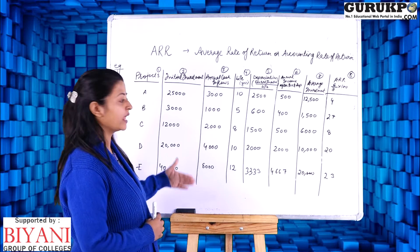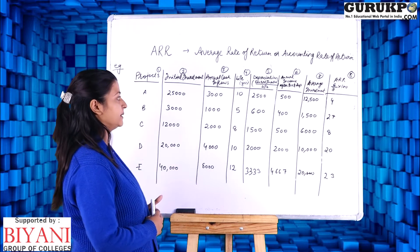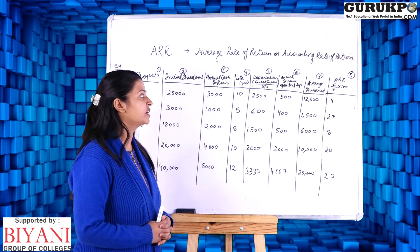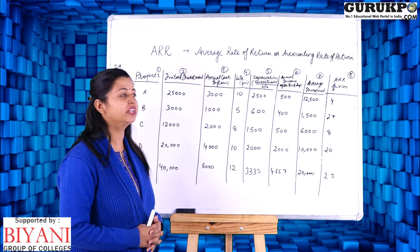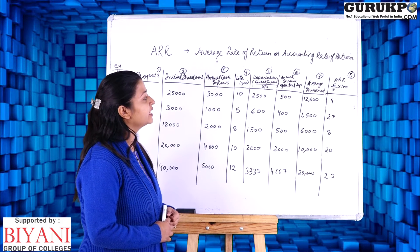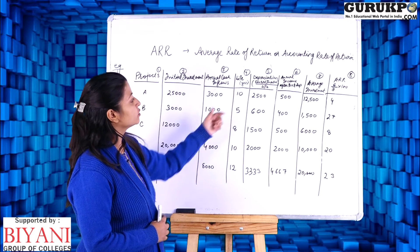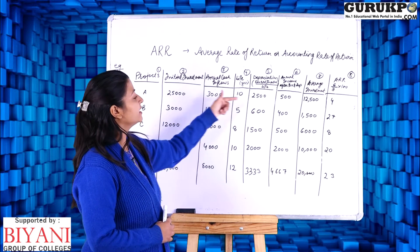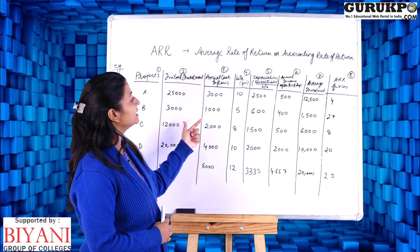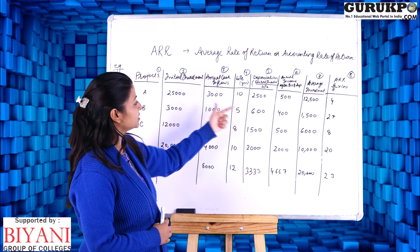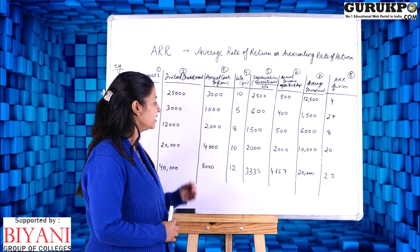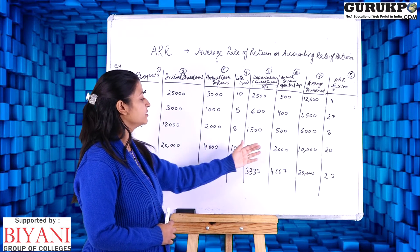In the same way, we calculate depreciation for C, D, and E. Then we deduct the depreciation amount from the annual cash flow to get annual income after tax and depreciation. So: A = 3,000 − 2,500 = 500; B = 1,000 − 600 = 400; C = 2,000 − 1,500 = 500; D = 4,000 − 2,000 = 2,000.